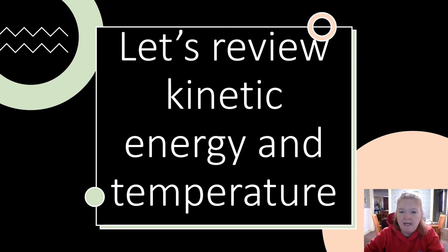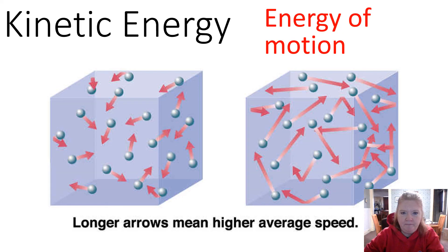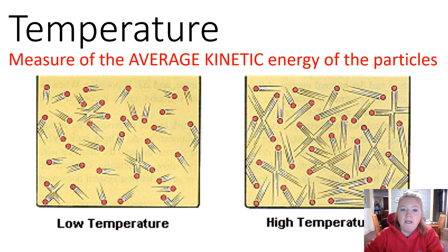Let's review kinetic energy and temperature. So kinetic energy is energy of motion. Temperature is a measure of the average kinetic energy of the particles. So at low temperature, that means there's less kinetic energy. That means the particles are moving slower. At a high temperature, that means more kinetic energy. That means the particles are moving faster.